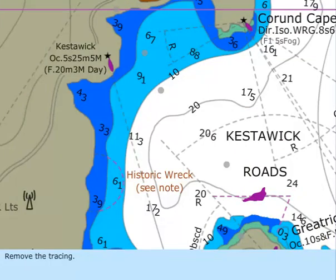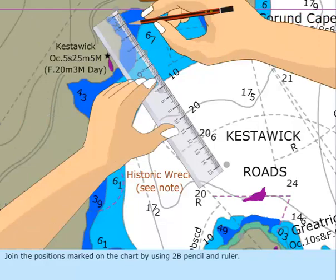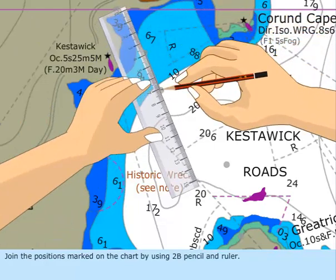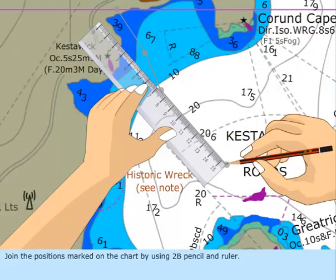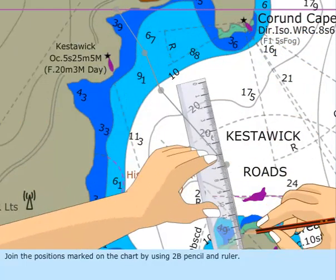Remove the tracing. Join the positions marked on the chart by using a 2B pencil and ruler.